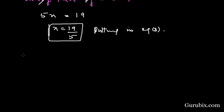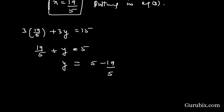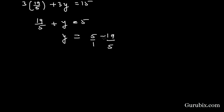Now we shall put this value of x into equation 3 to find y. Equation 3 gives: 3(19/5) + 3y = 15. Dividing both sides by 3: 19/5 + y = 5, so y = 5 - 19/5 = 6/5. Therefore y = 6/5.